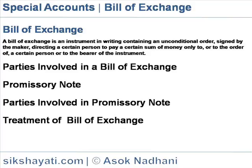Promissory Note: A Promissory Note is also a negotiable instrument. It has only two parties with a promise to make payment unconditionally. As per the Negotiable Instruments Act, a Promissory Note is an instrument in writing — not being a bank note or currency note — containing an unconditional undertaking signed by the maker to pay a certain sum of money to, or to the order of, a third party.